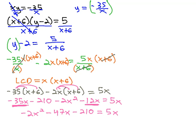Now that we've simplified, we like the equation to equal zero. We also like x squared to be positive, and it's negative right now. So let's add 2x squared to both sides. Also add 47x and add 210.